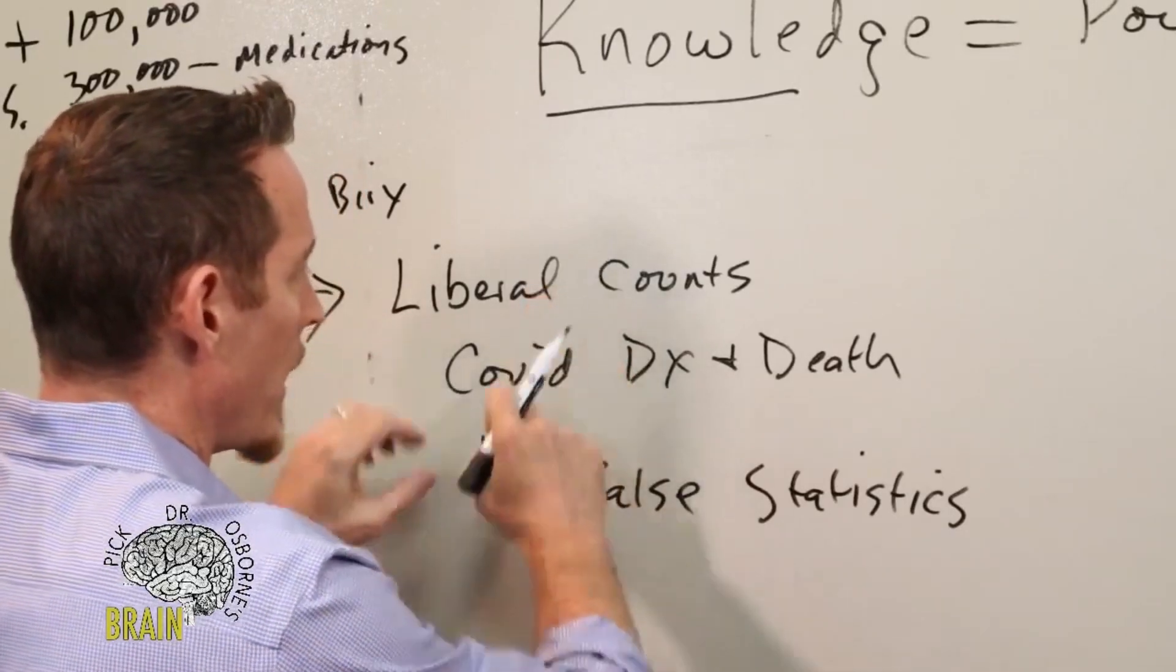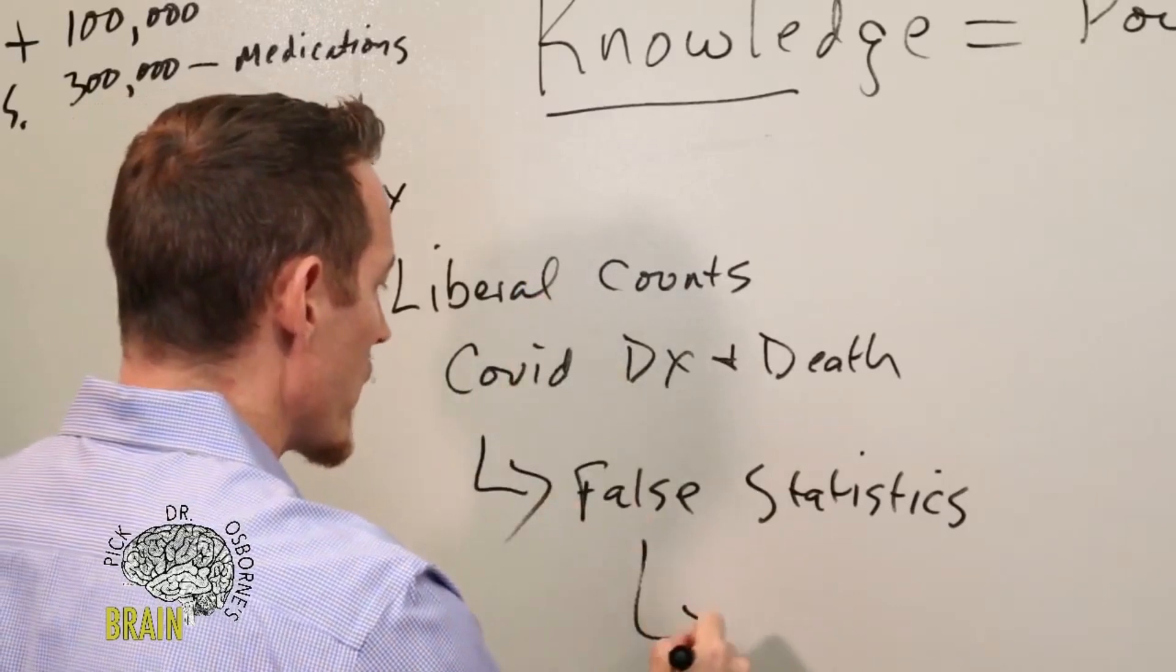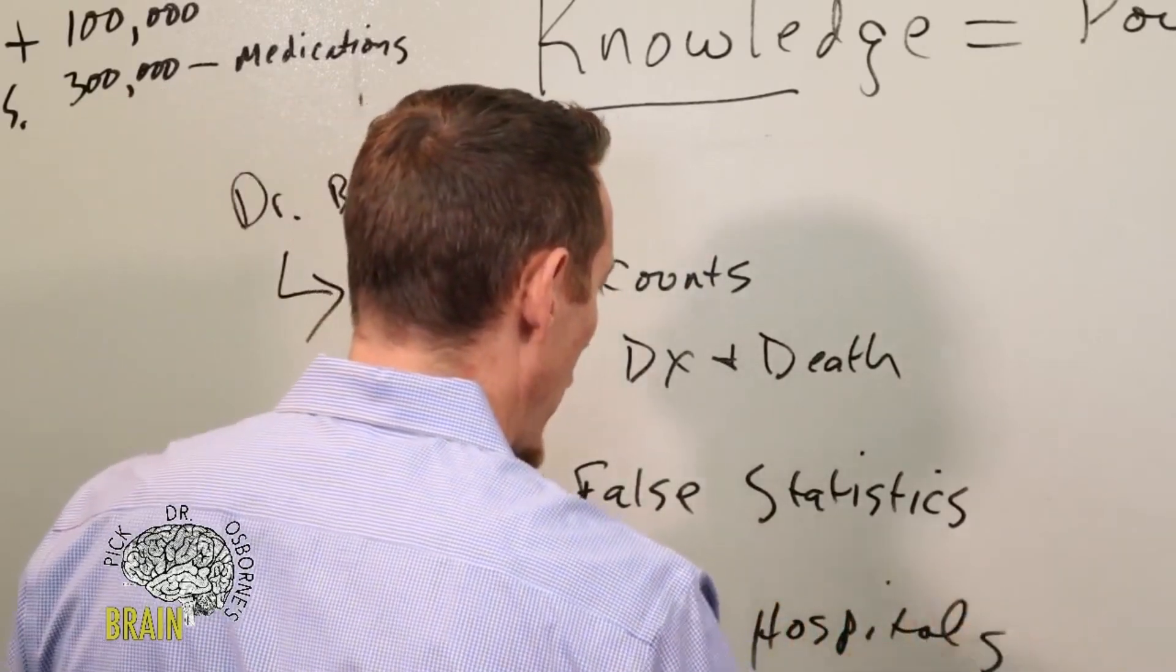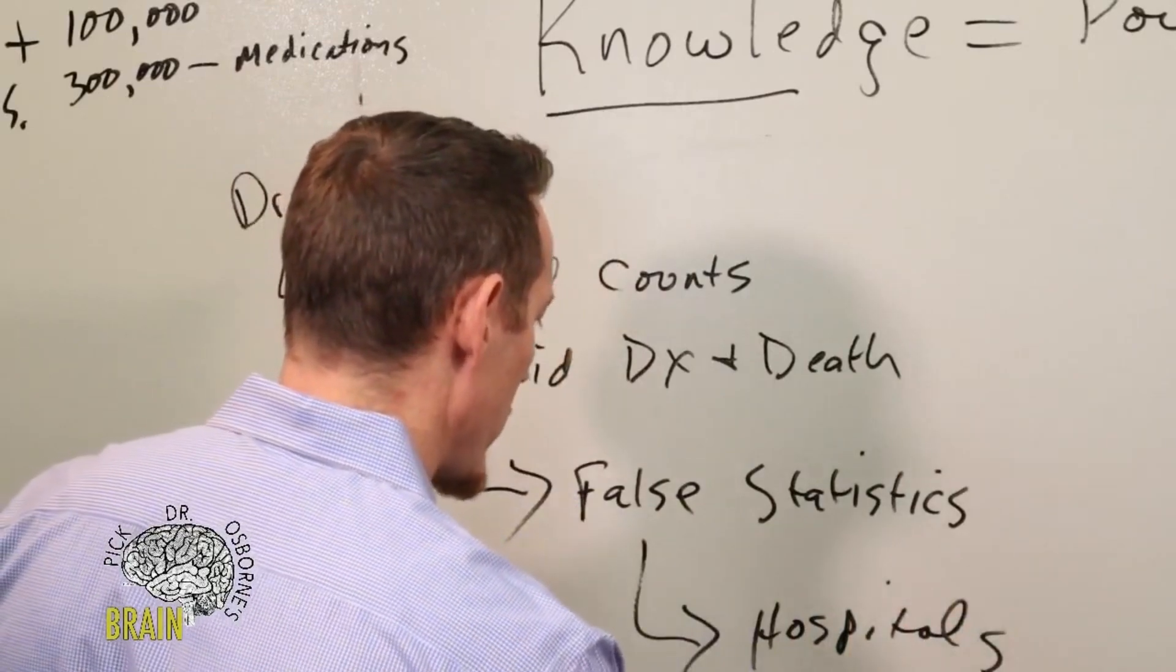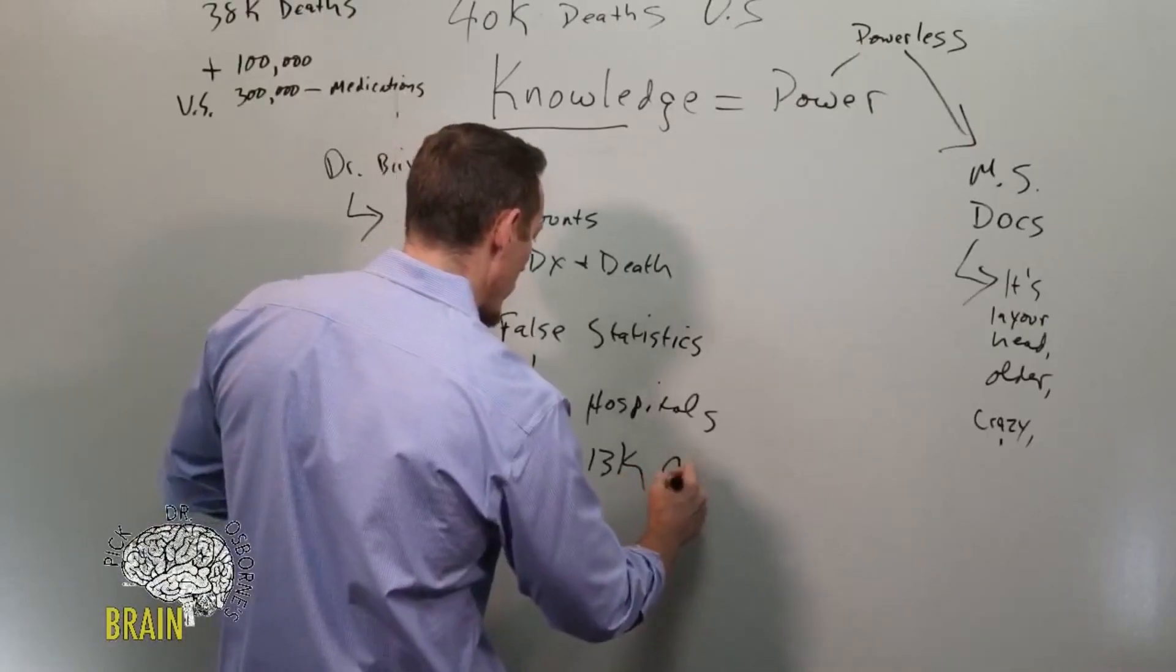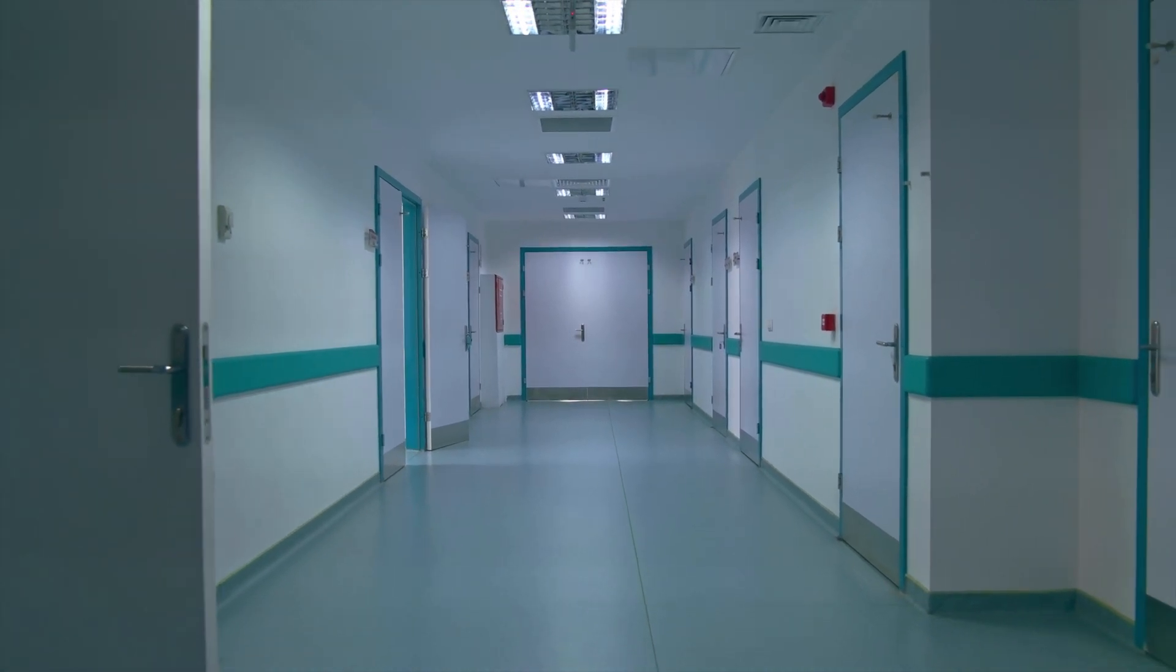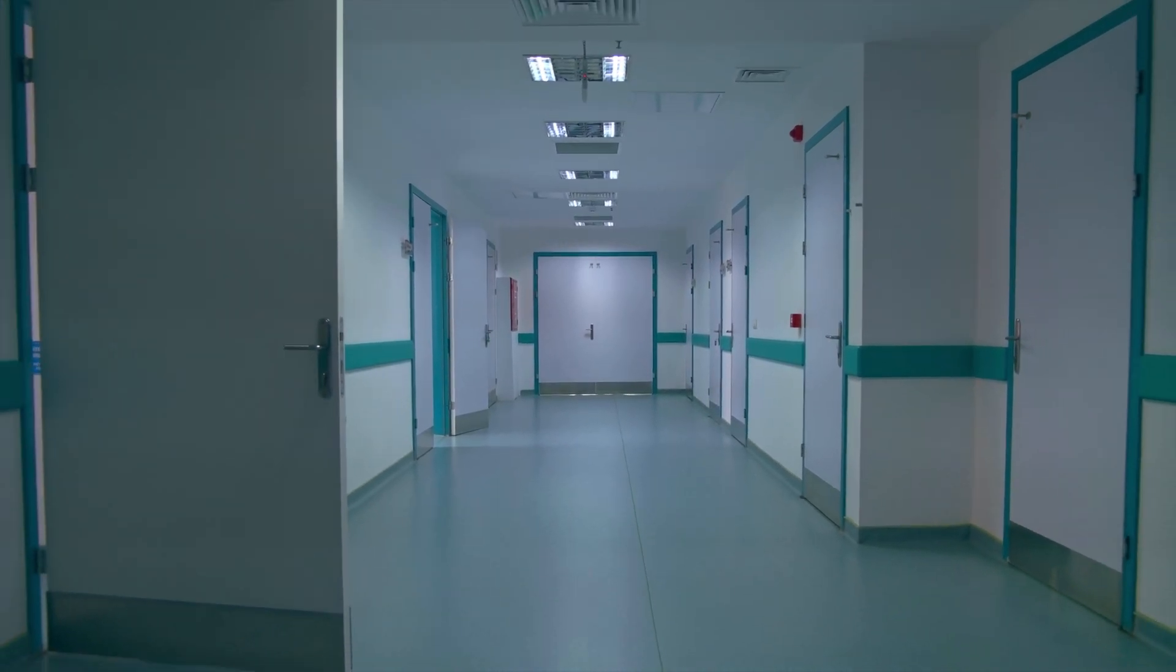We also know that hospitals right now are being incentivized to call it COVID. So hospitals get $13,000 for a COVID patient and they get $39,000 for a COVID death.